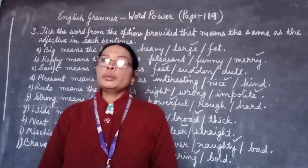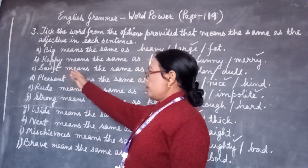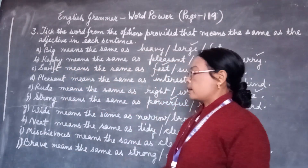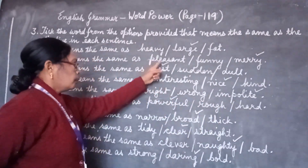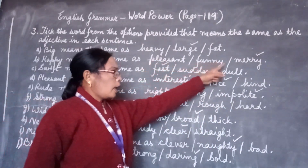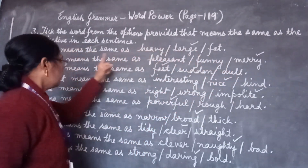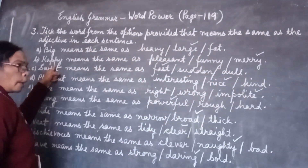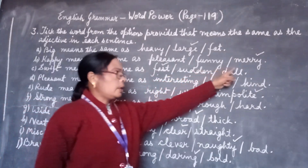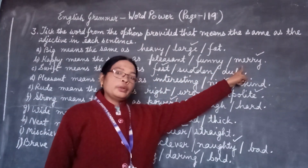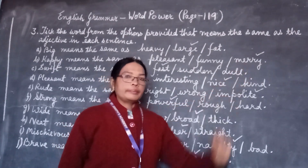Come to number B. 'Happy' means the same as — the options are failure, pleasant, funny, and maybe. The adjective is happy, and the correct meaning is pleasant. That's why we will put a tick mark on pleasant.